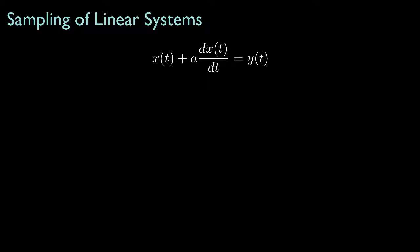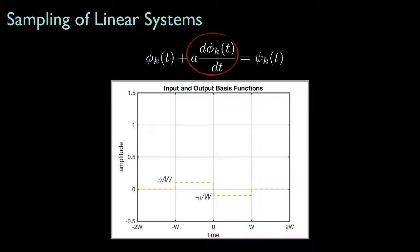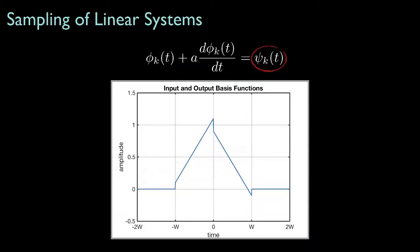It turns out that the superposition system we've been discussing, with this exponential impulse response, can also be represented by a first-order differential equation. Now, if we sample the input by a triangular basis of width w, then the basis for k equals 0 might look like this. The derivative of that basis function, multiplied by the coefficient a, would look like steps of height plus and minus a over w, because the derivative of a triangular function is constant over both sides of the triangle.